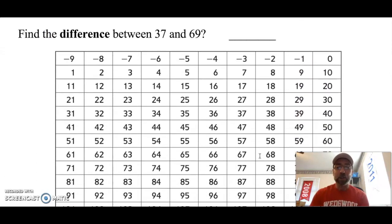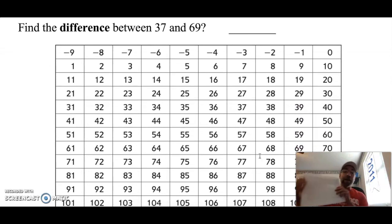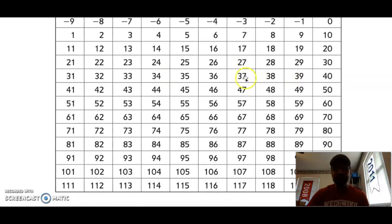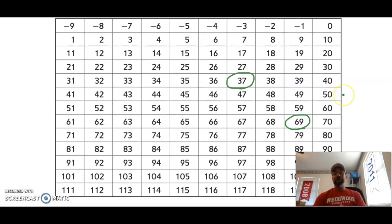So let's go ahead and try one on our number grid. If you take your number grid right in front of you and you have your marker, here's our problem: Find the difference between 37 and 69. So if you remember, our first strategy was to find both those numbers first. So I'm going to go ahead and look for those numbers and circle them: 37 and 69.